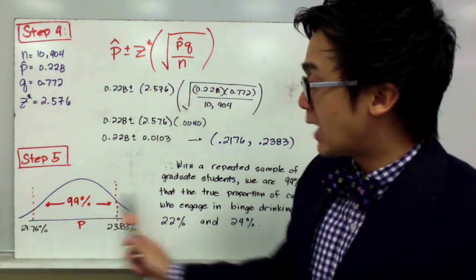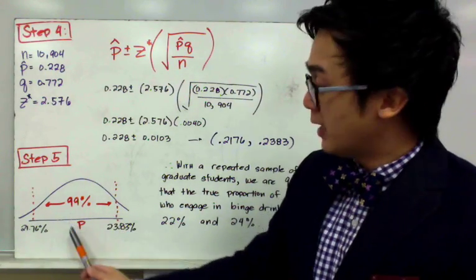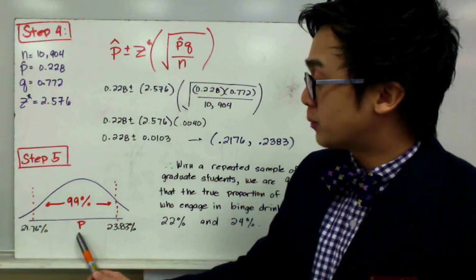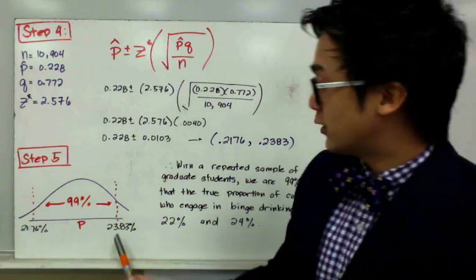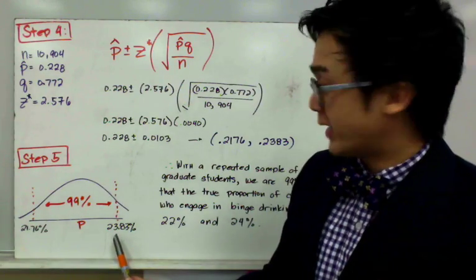Our confidence interval from our formula will be 0.2176 and 0.2383. In our illustration, this is our 99% confidence level. Our true population proportion is in between the range 21.76% and 23.83%.